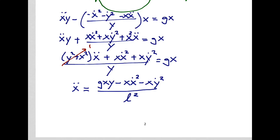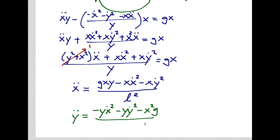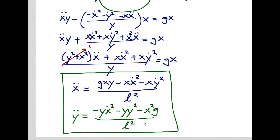We now have our equation of motion for x-double-dot as a function of x, y, x-dot, y-dot, g, and L. There's also a corresponding equation for y-double-dot: y-double-dot = (−y·x-dot² − y·y-dot² − x²·g) / L². These two equations are coupled together, and while we can certainly solve them numerically, we can't do it by hand.